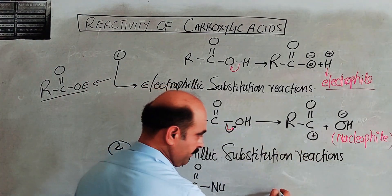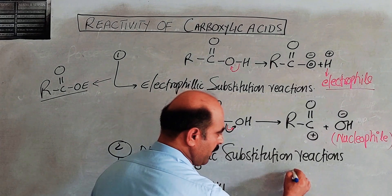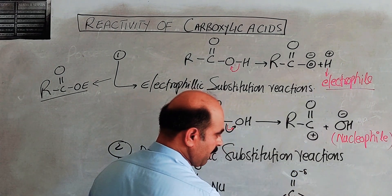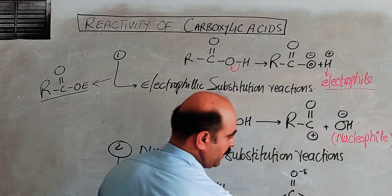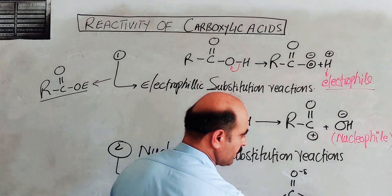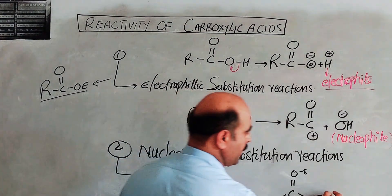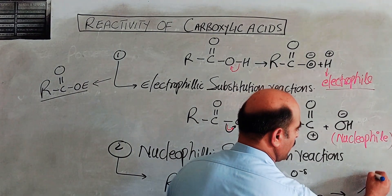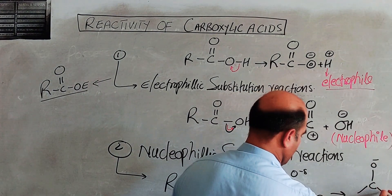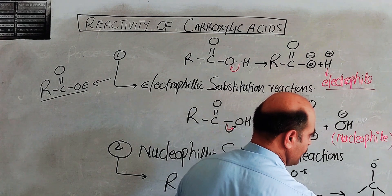Nucleophilic addition: the partial negative and partial positive charges are key. The nucleophile rushes toward the partial positive carbon. Our carbon-oxygen double bond becomes a single bond as the nucleophile adds. This is the nucleophilic addition mechanism.